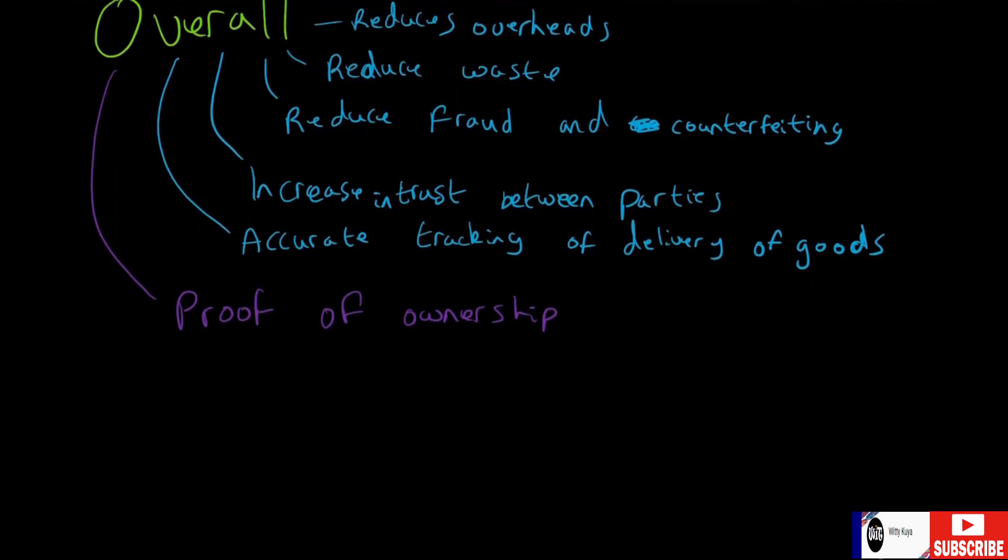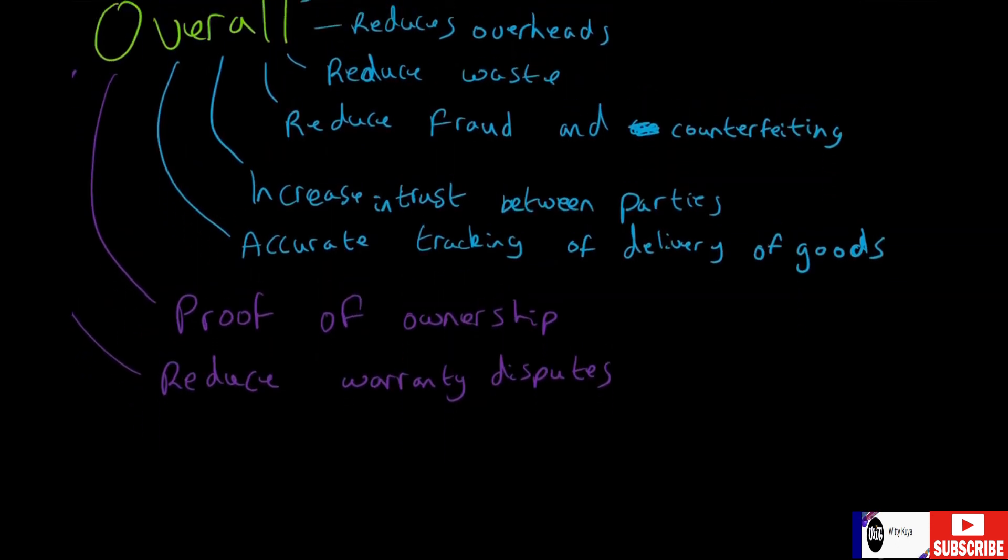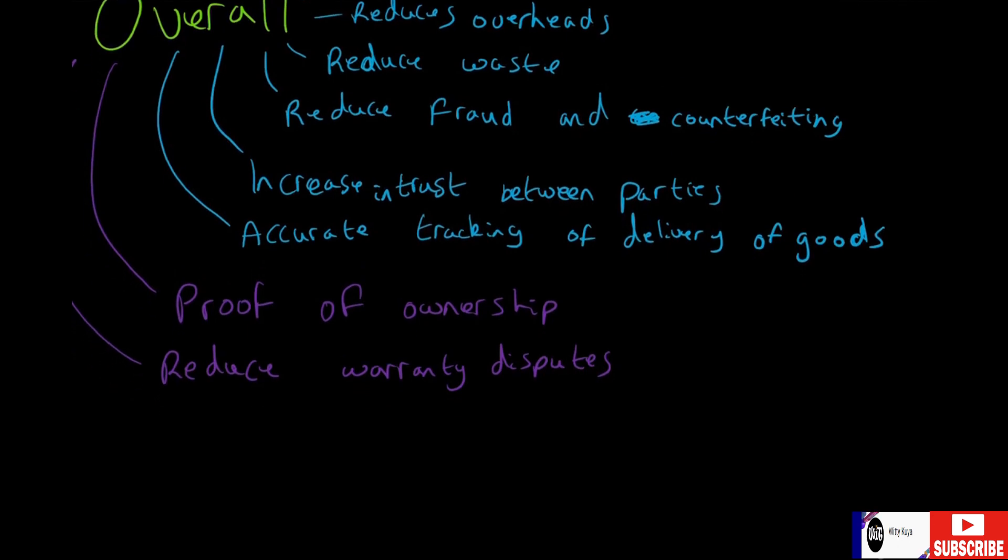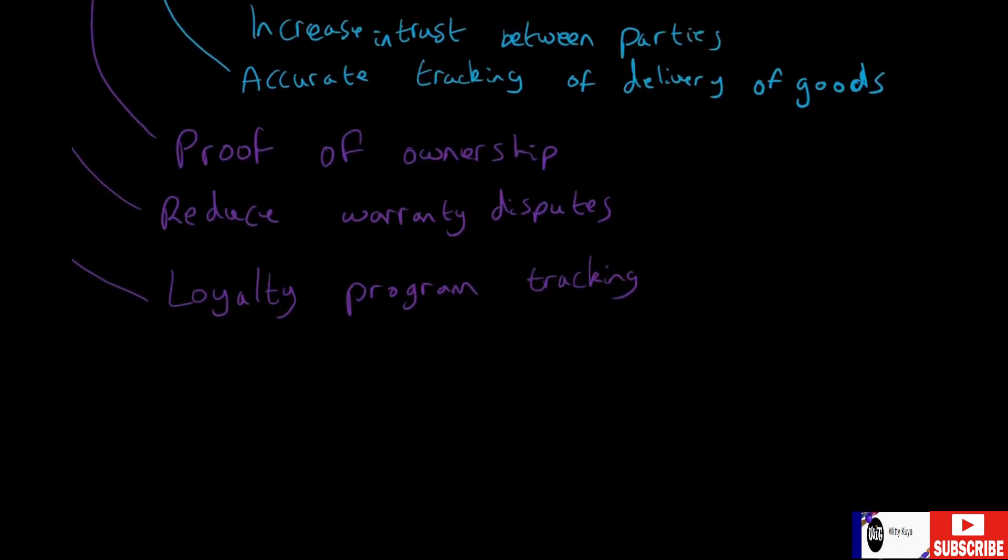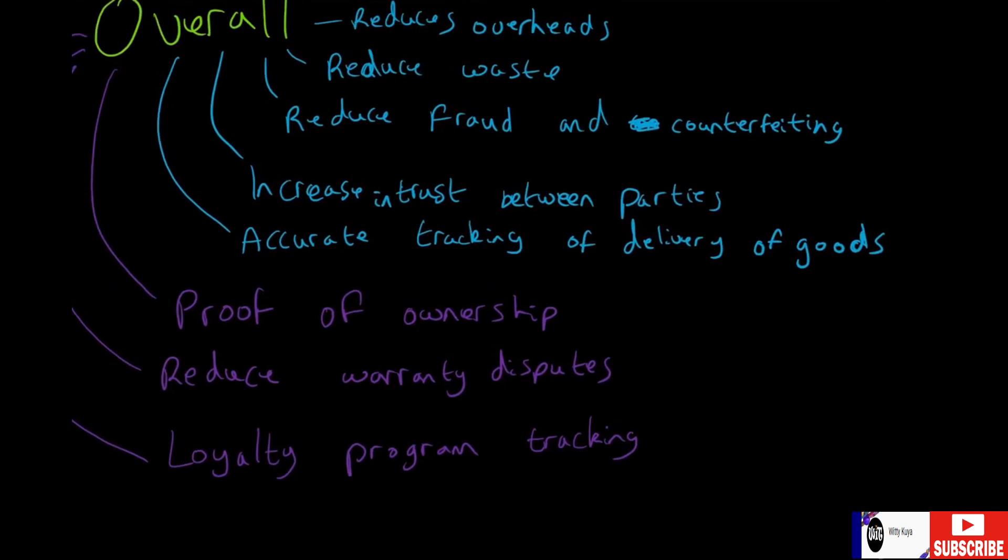This will also reduce warranty disputes because you can truly see, okay, this person actually did buy it, so it is theirs. It's only been within certain countries. Maybe the product is only eligible for return or repair if it's stayed within the country it was bought in. So that'll help reduce warranty disputes. Many companies have some sort of loyalty-based system, and you'll basically provide a more accurate way of tracking loyalty points.